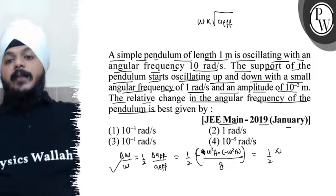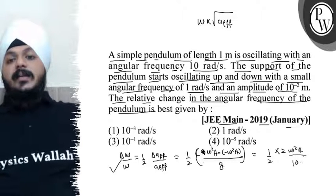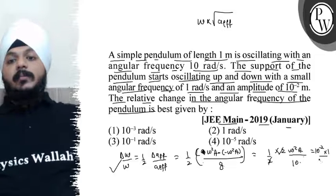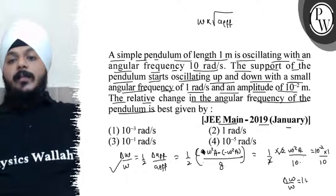This will be half times 2 times omega squared times a, all divided by g. That is 10 squared times 10^-2 times 1/10. So delta omega by omega equals 10^-3 radian per second.